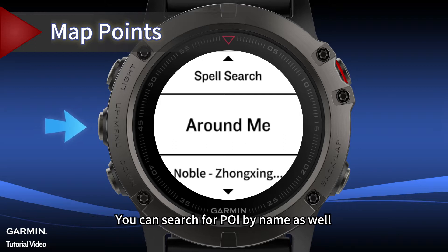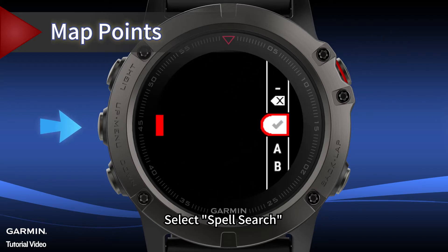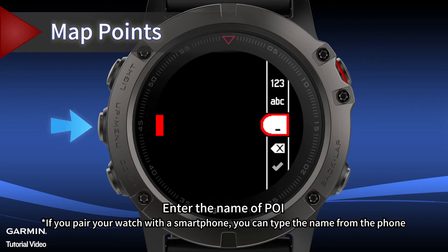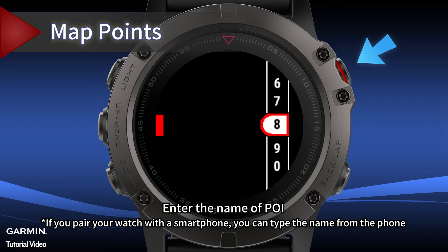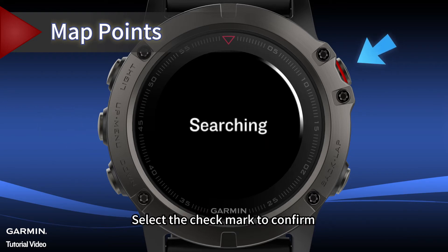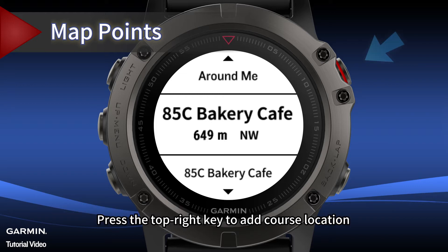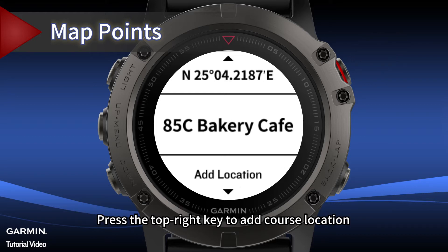The device will search for POIs around the area you selected. You can also search for a POI by name. Select Spell Search, then enter the name of the POI — if you pair your watch with a smartphone, you can type the name from the phone. Select the checkmark to confirm, and a list showing the search results around your current area will be shown on the device. Press the top right key to add the course location.